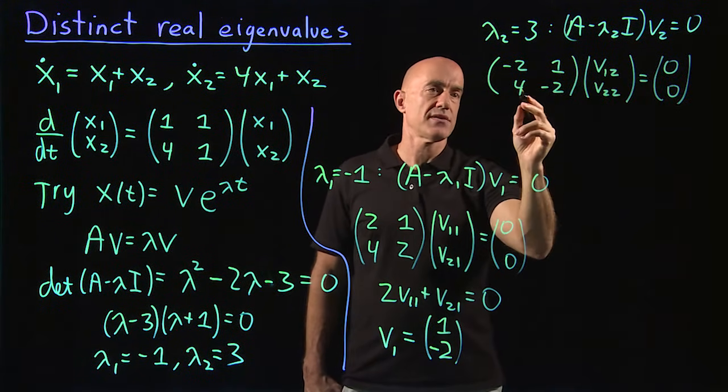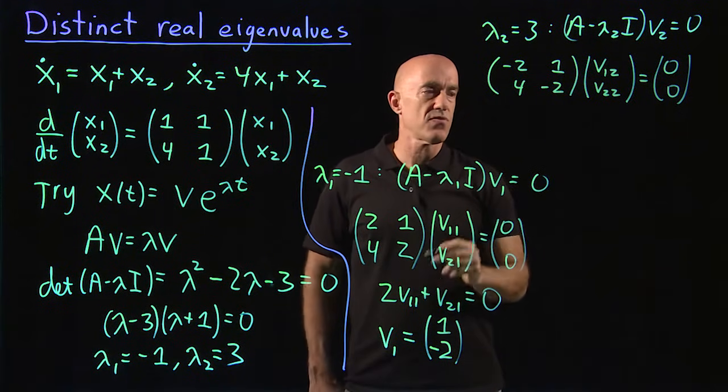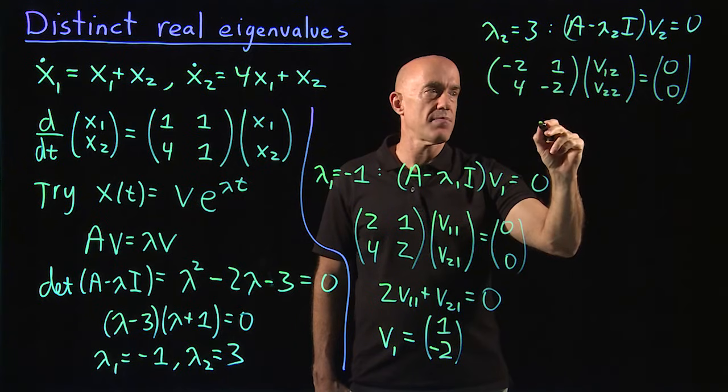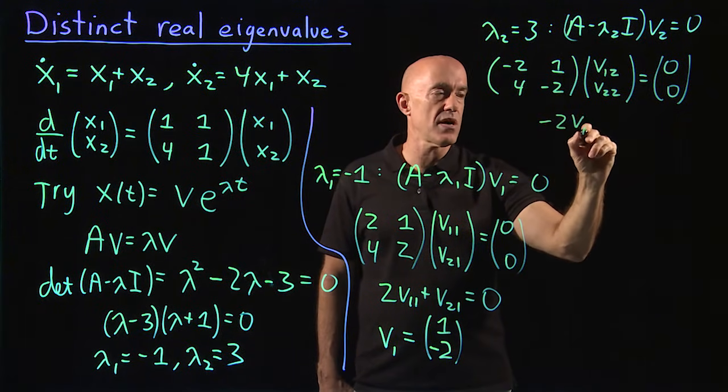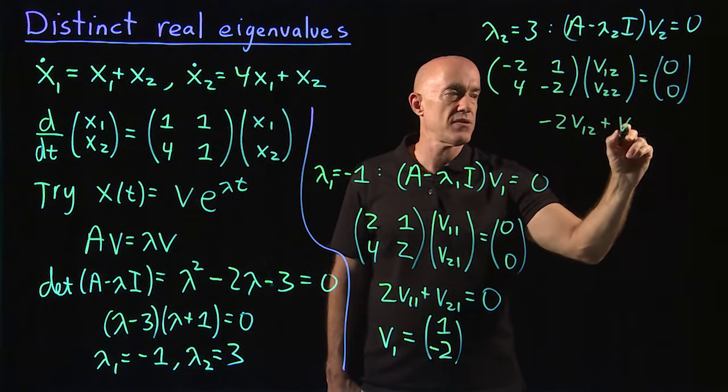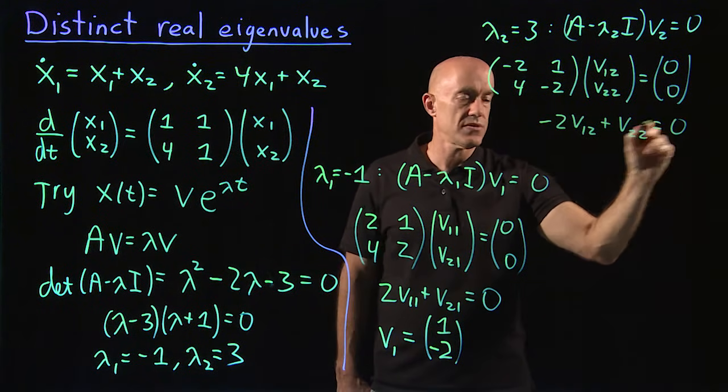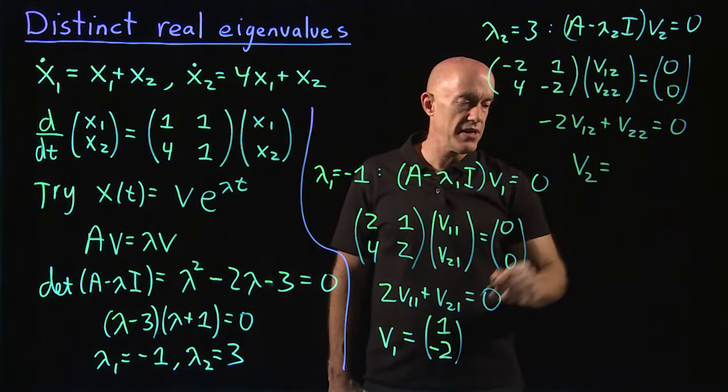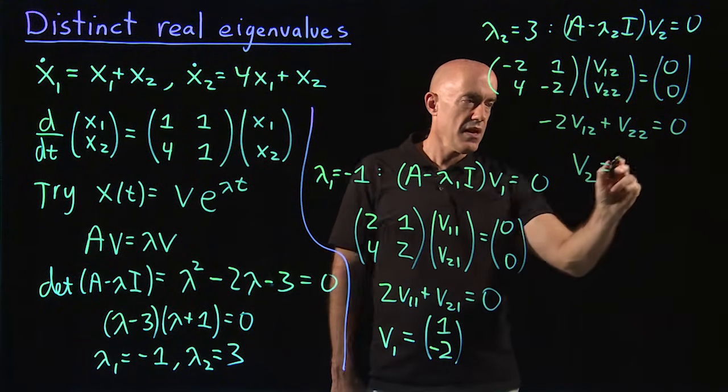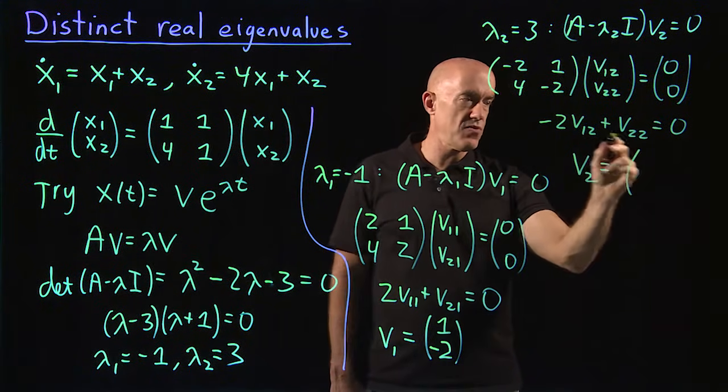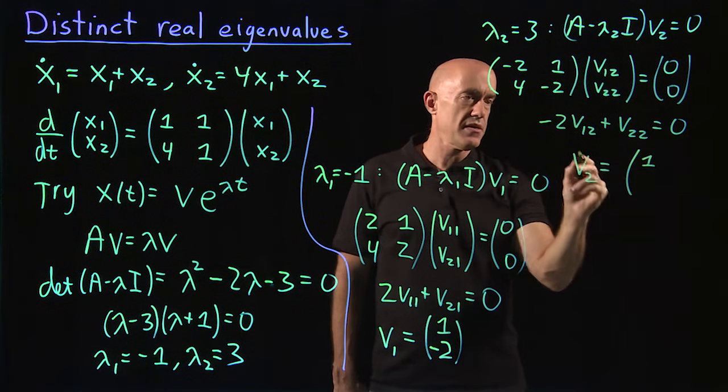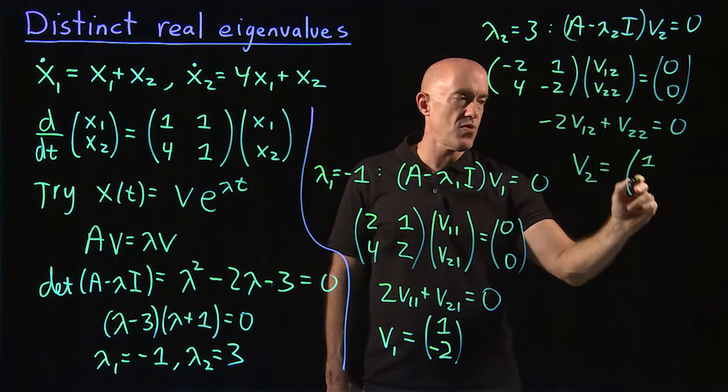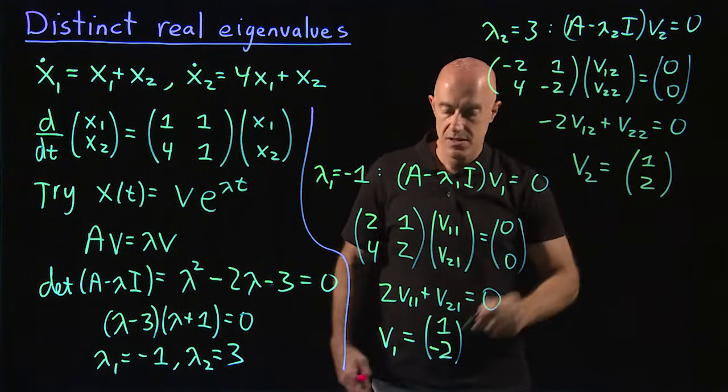Again, the second row is just minus 2 times the first row. So you only need the first row. We have minus 2v₁,₂ plus v₂,₂ equals 0. And we get the second eigenvector here. We can take v₁,₂ equal to 1, and then v₂,₂ is equal to 2.